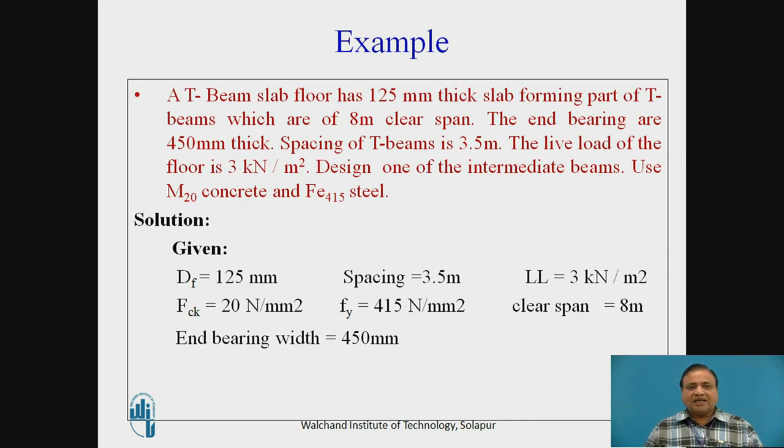Let us see an example. A T-beam of slab floor has 125 mm thick slab forming part of T-beam, which are of 8 meter clear span. The end bearings are 450 mm thick. Spacing of T-beams is 3.5 meter. The live load on the floor is 3 kN per meter square. Design one of the intermediate beams using M20 concrete and Fe415 steel.